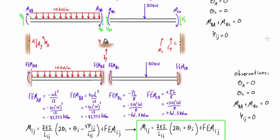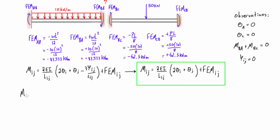We're going to use the slope deflection equation four times to solve for M-AB, M-BA, M-BC, and M-CB. Each time, we replace I and J with the respective letters for the internal moment we're looking for. For M-AB, we replace all I's with A's and J's with B's. We get 2EI over L-AB — the flexural rigidity is constant, and L-AB is 10 meters — giving us 2θA plus θB.